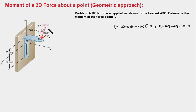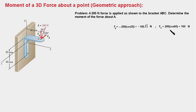We begin by resolving the 200 N force acting at point C of the bracket into its vertical and horizontal components. Fy works out to minus 200 cos 30°, which is minus 100√3 newtons, and Fz works out to 200 cos 60°, which equals 100 newtons. Note that this force has no x-component because it lies entirely in the YZ plane. We now need to compute the moment of this force about point A.